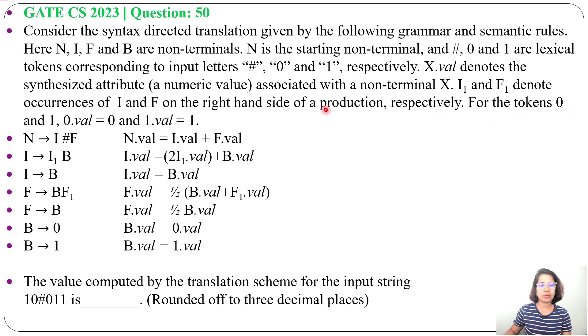For the tokens 0 and 1, 0.value equals 0 and 1.value equals 1. Here, grammar is given with the semantic rules.